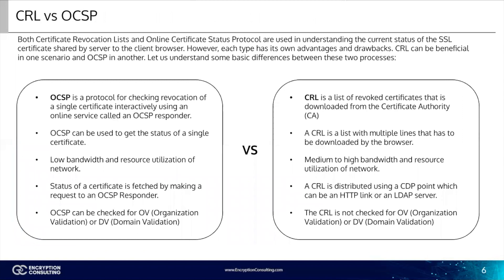Now it's time to go into the differences between CRL and OCSP. Both Certificate Revocation Lists and Online Certificate Status Protocol are used in understanding the current status of the SSL certificate shared by the server to the client browser. However, each type has its own advantages and drawbacks — CRL can be beneficial in one scenario and OCSP in another. OCSP is a protocol for checking revocation of a single certificate interactively using an online service called an OCSP responder, whereas a CRL is a list of revoked certificates that is downloaded from the CA. OCSP can be used to get the status of a single certificate; a CRL is a list with multiple entries that has to be downloaded by the browser.